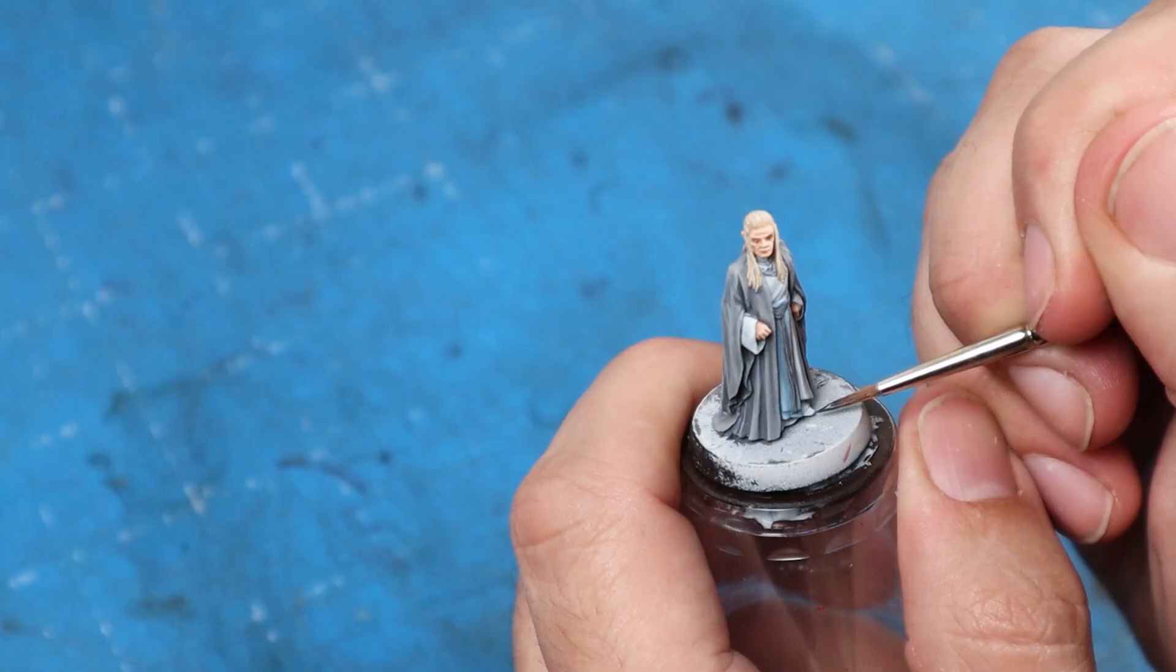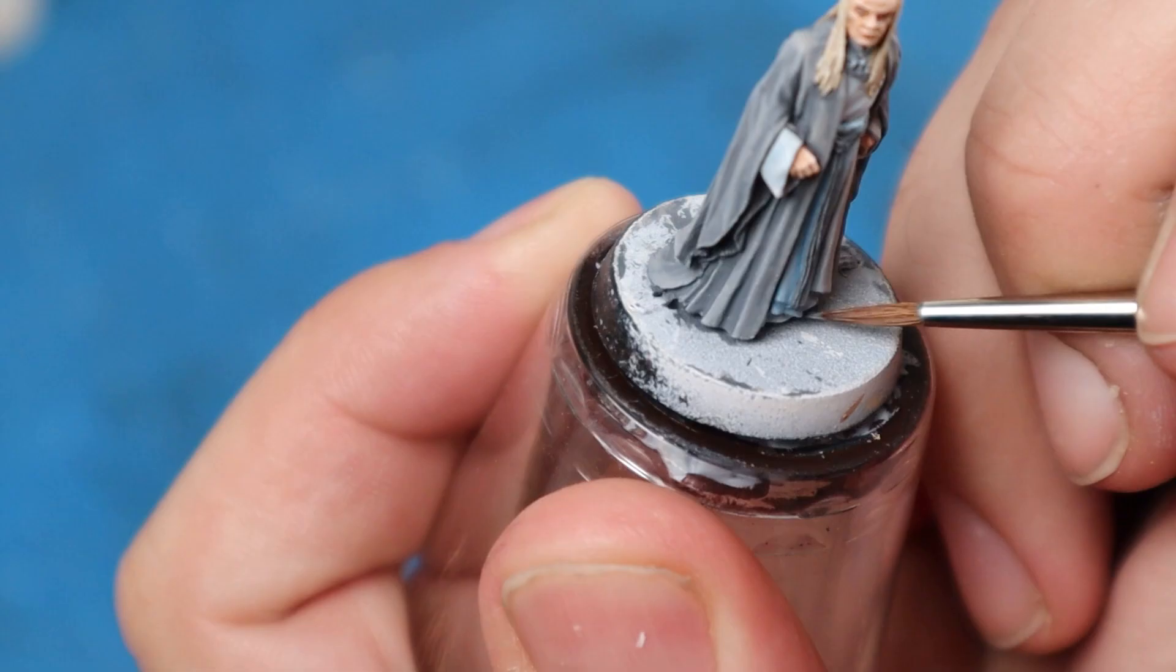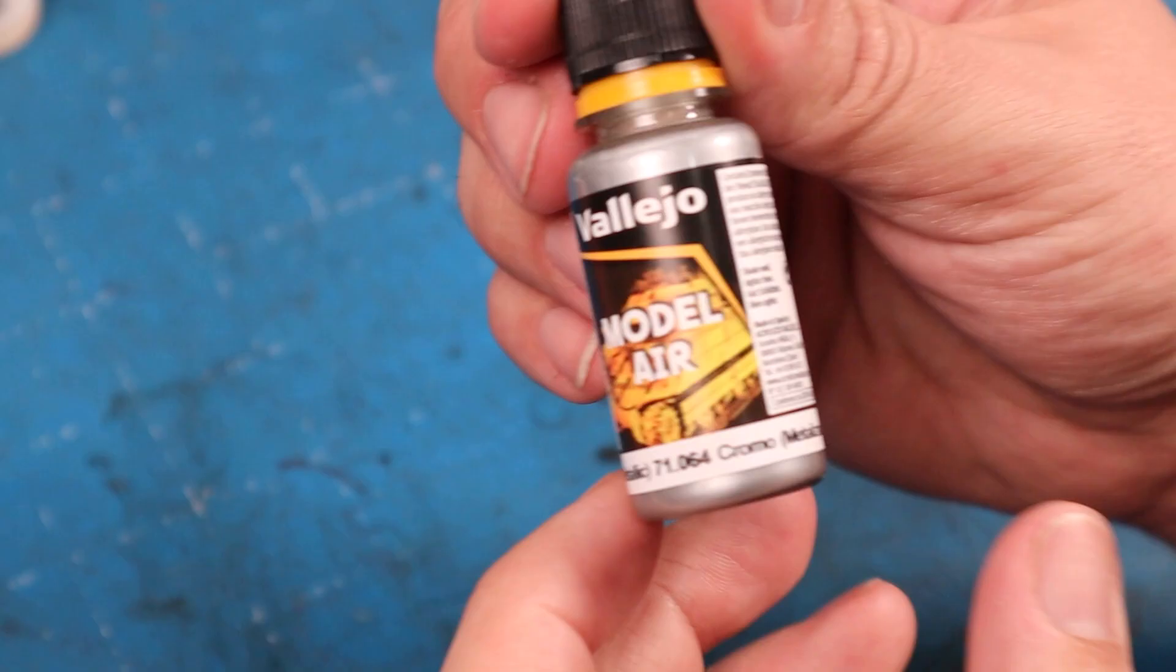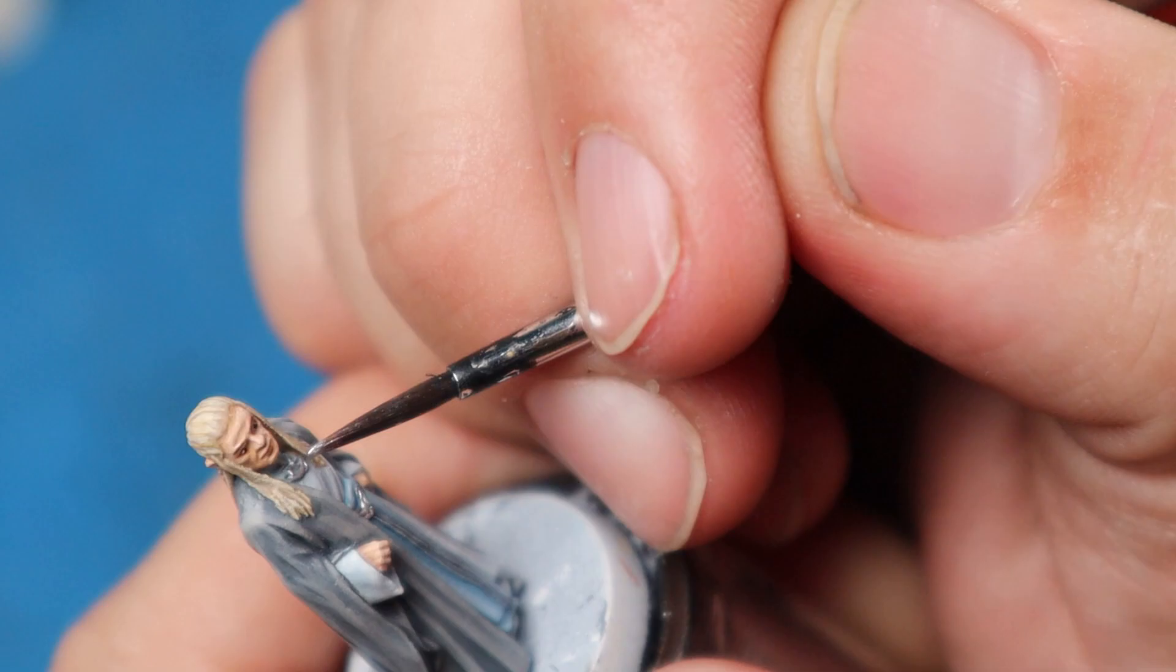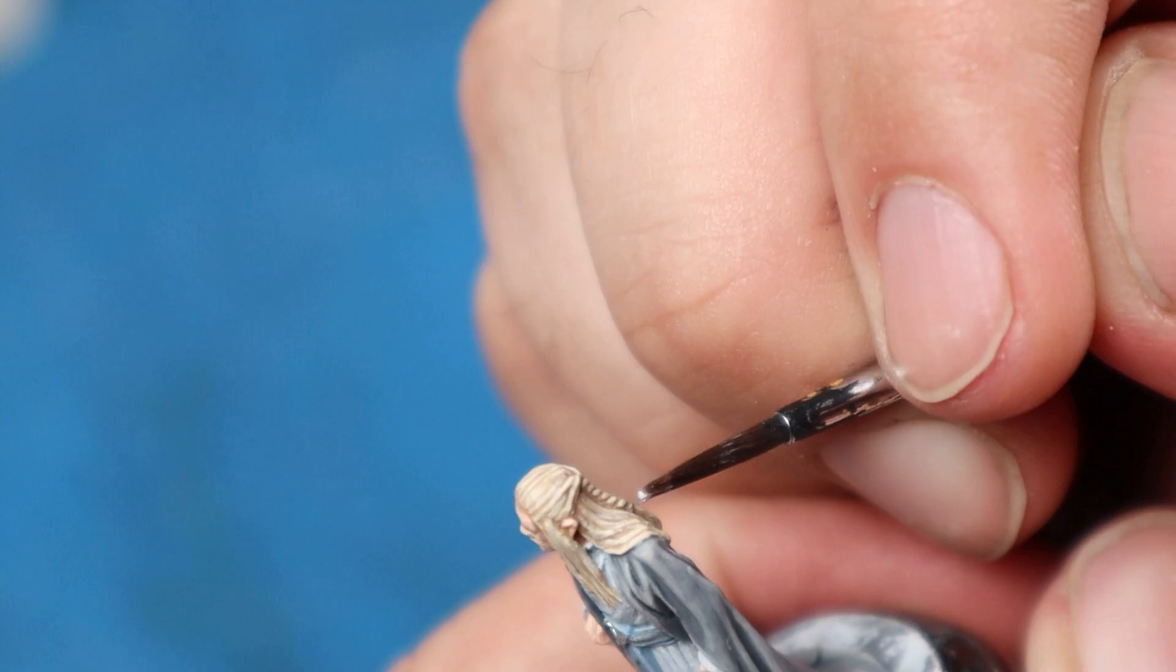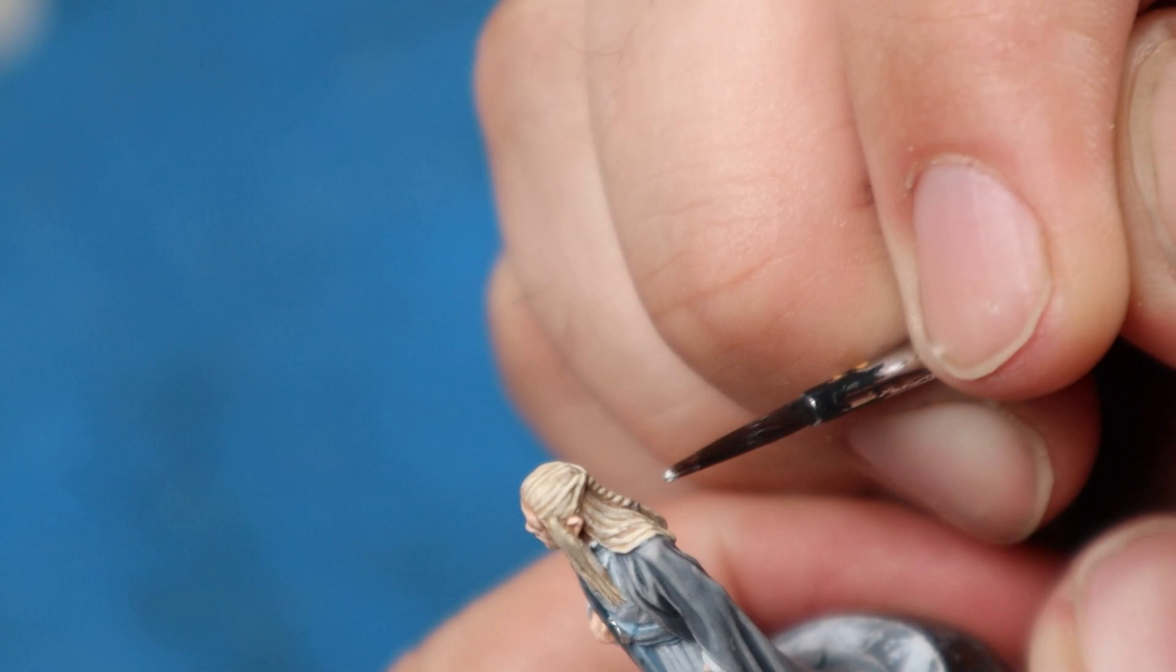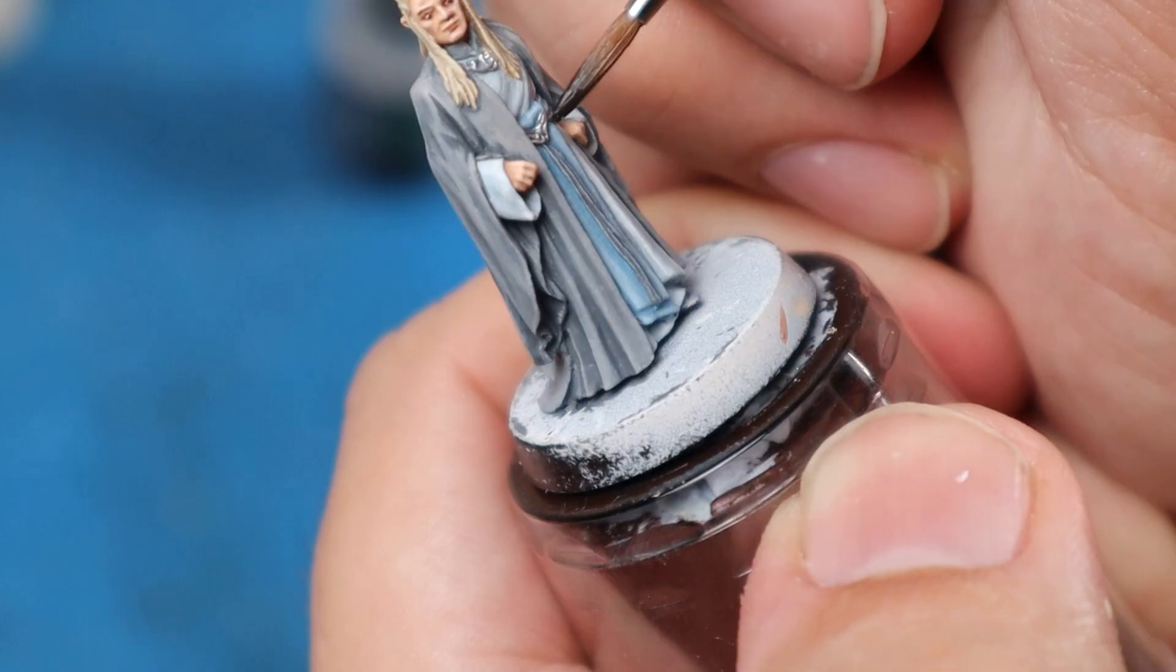I almost forgot one little detail. I used some dark grey and painted in the end of his shoe, sticking out beneath his robes, giving it a quick edge highlight of sky grey. Then for the last little bit, I used Vallejo Air Chrome to carefully pick out the metallic detail of the belt buckle thing, and his neck jewellery shiny thing, as well as the little hairband tying off the plait in his hair. Then I just used a tiny bit of watered down Nuln Oil to bring out the details on the buckle. So with Celeborn all done apart from his base, it was time to move on to Galadriel.